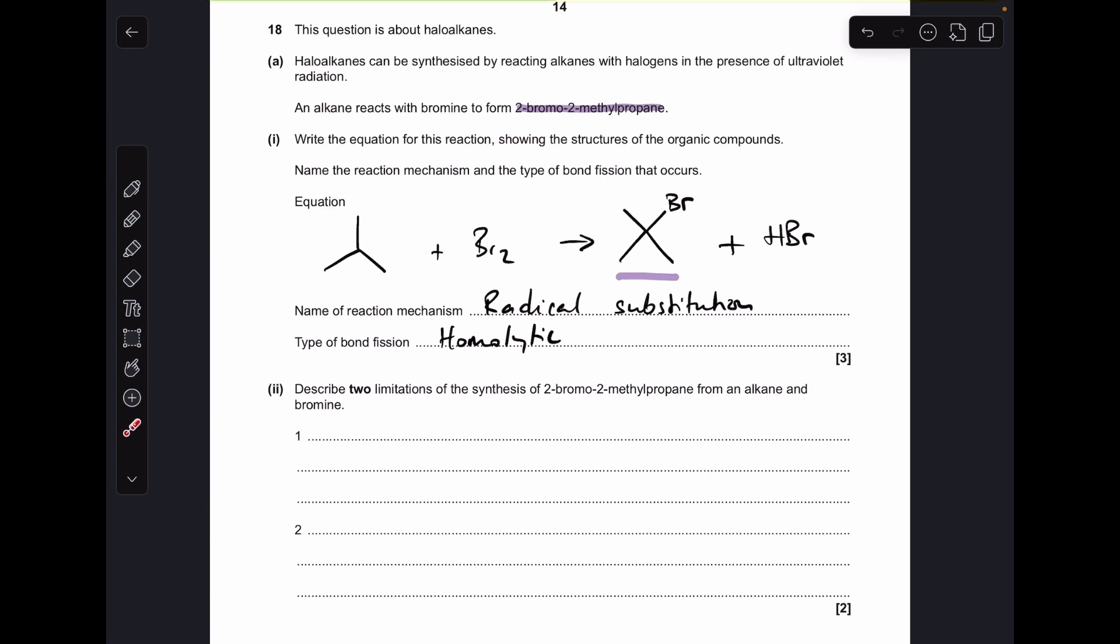In part 2, we've got to give two limitations of the synthesis of this from an alkane and bromine. The first thing you could say is substitution could be anywhere on the carbon chain, so it doesn't automatically go on carbon-2. It could go on these carbons here, which would all be classed as carbon-1.